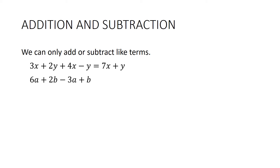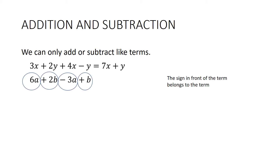A common error is to get the signs mixed up. Here's a little trick: the sign in front of the term belongs to that term. If we circle from the back, it shows you who belongs with what. So this is a 6a and this is a negative 3a. 6a minus 3a is 3a, and 2b plus b is 3b.